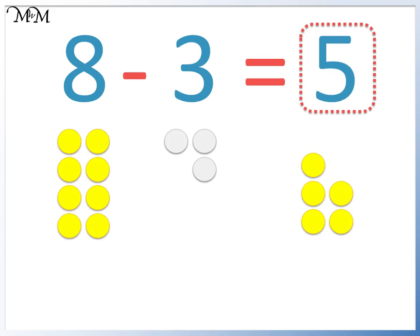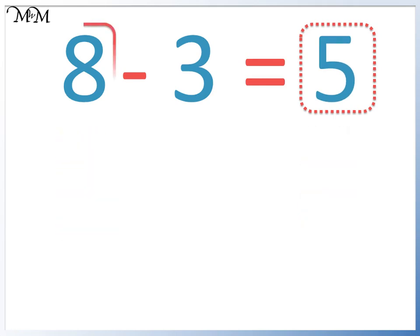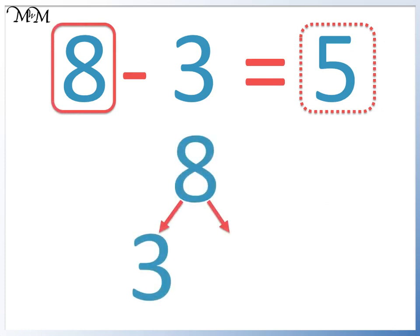We can see that the 3 we removed can be added to the 5, and we have 8. Another way to see this is that 8 is made of 3 and 5, which are the two smaller numbers added together.